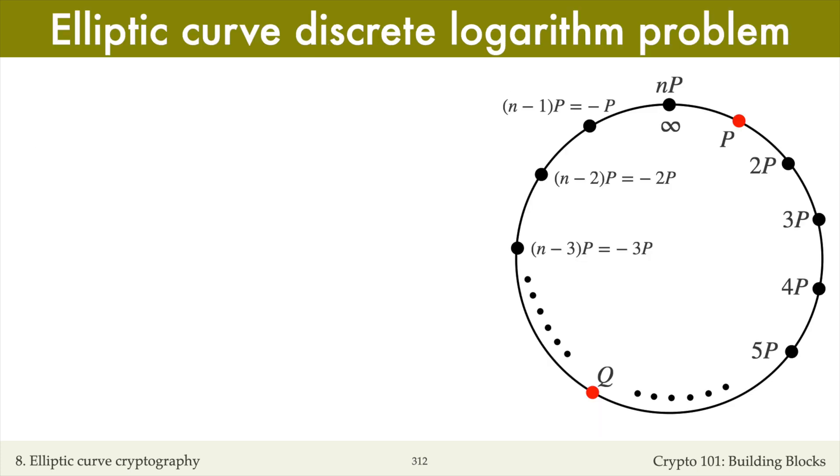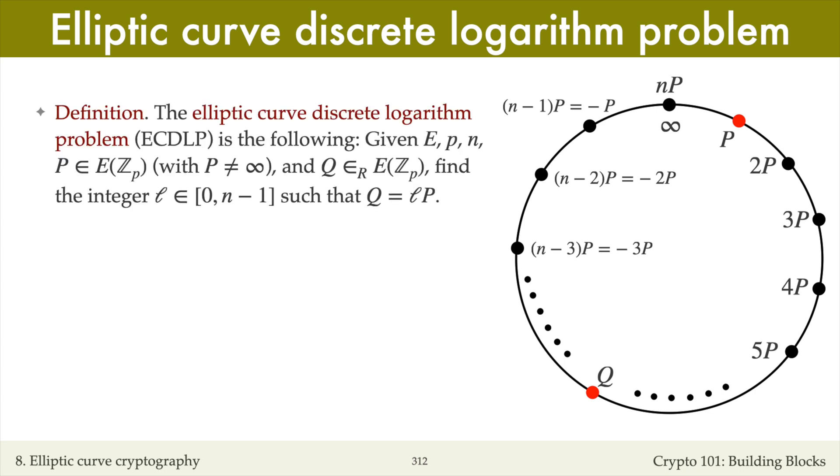I can now define the elliptic curve discrete logarithm problem, or ECDLP. In this problem, we're given an elliptic curve defined over the integers modulo p, whose number of points n is prime. We're also given an arbitrary point P on the elliptic curve, other than the point at infinity, and a randomly selected point Q on the elliptic curve.